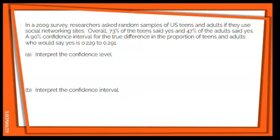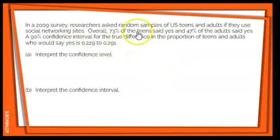Last example. In a 2009 survey, researchers asked random samples of U.S. teens and adults if they used social networking sites. Overall, 73% of teens said yes and 47% of adults said yes. A 90% confidence interval for the true difference in the proportion of teens and adults who would say yes is 0.229 to 0.291. Part A: interpret the confidence level. We need our confidence level, which is 90%.